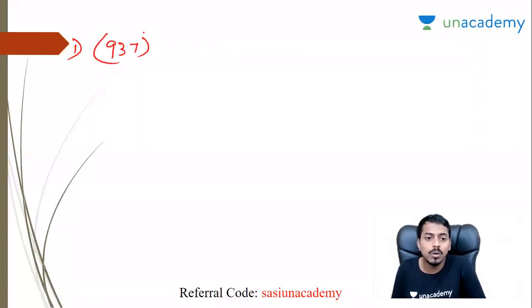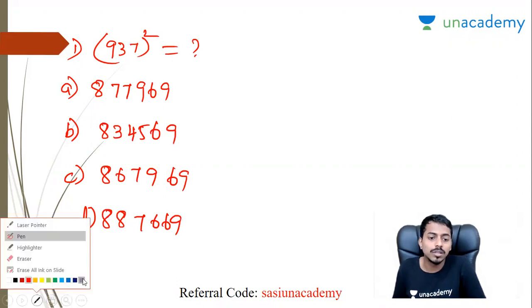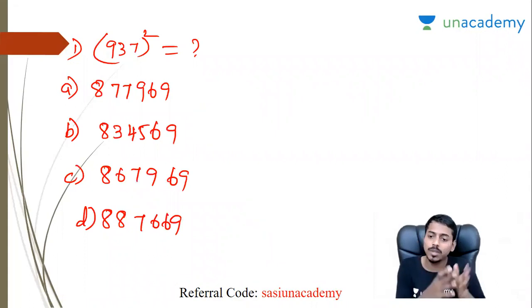So the first question: 937 the whole square. So this is basic arithmetic questions. Option A 877969, option B 834569, option C 867969 and D 887669. So in the sum there is 937 square. This is the basic math concept. In the 937 square, we have classes, we will go to the cheat codes.